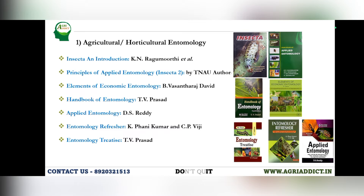Next is 'Principles of Applied Entomology,' also called Insecta 2, written by the same TNA authors, K.N. Raghu Murthy et al. This book covers the applied portions: beneficial insects, storage grain pests, toxicology, pesticide appliances, some properties portions, biological control, and IPM is also very well described. An entomology aspirant should read and revise this book almost 5 to 6 times properly.